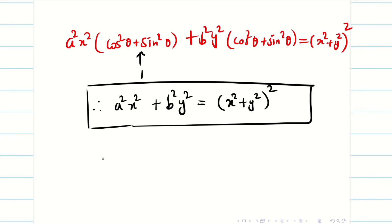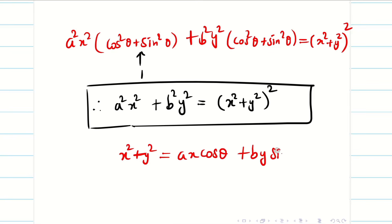Therefore the envelope for the given question x² + y² = ax cosθ + by sinθ is a²x² + b²y² = (x² + y²)². We do not need to simplify this further; we can leave it as is.